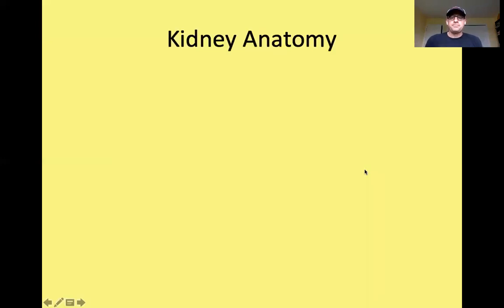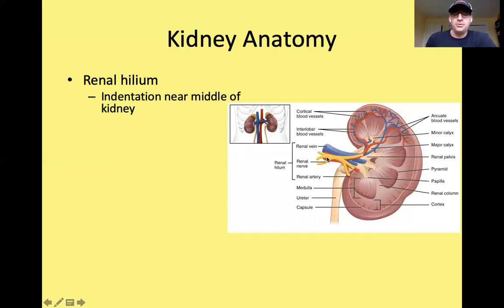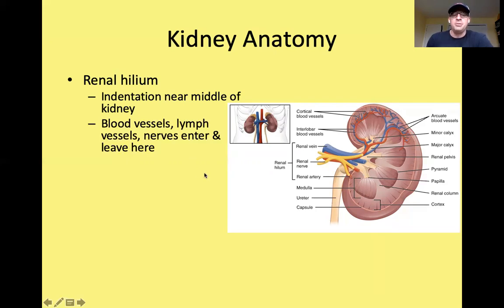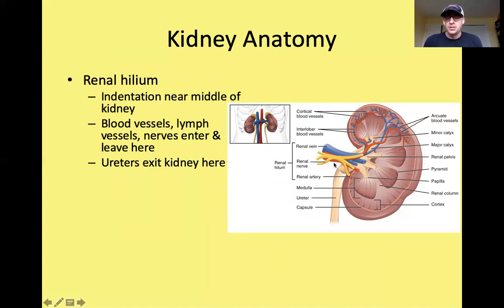For kidney anatomy, a few things to point out. The renal hilum is the indentation near the middle of the kidney — that middle part that bends in. That's where blood vessels, lymph vessels, and nerves enter and leave the kidney. The ureters also exit the kidney at the renal hilum.